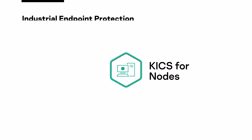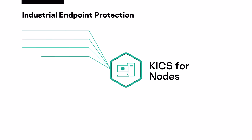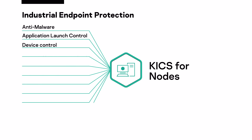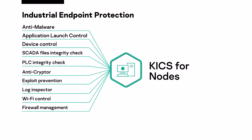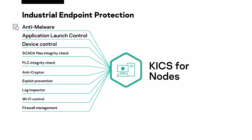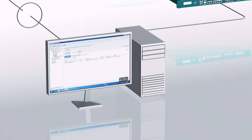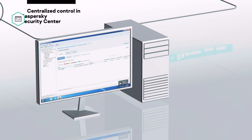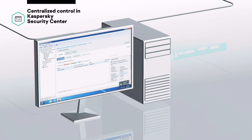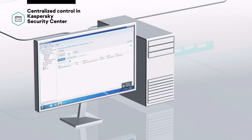The dedicated software product KICS for Nodes is installed to protect industrial servers, workstations and embedded systems. It has many optional security components, but its main functions are: protection from malware including ransomware, application launch control allowing only authorized software to be launched, and device control for controlling external devices when they are connected. Centralized monitoring and management of configuration and security policies is performed from the Kaspersky Security Center management server.